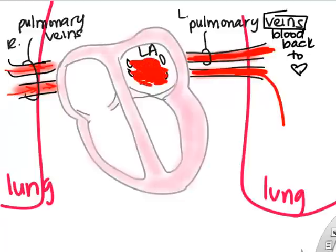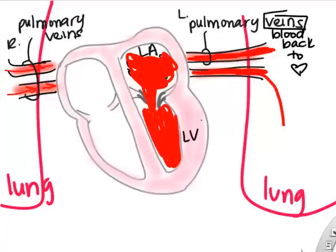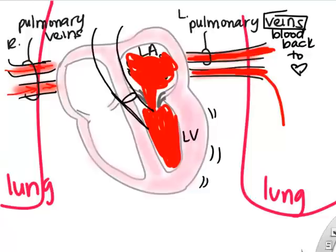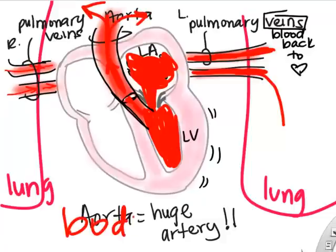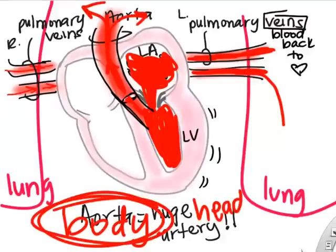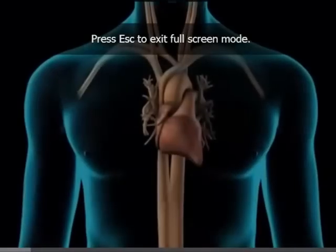Blood pressure from the left atrium pushes open the mitral valve, filling the left ventricle. When the left ventricle contracts, it squirts blood into the aorta through the aortic valve. The aorta carries blood to your head, arms, chest, and legs — all over your body. That one-way valve in the aorta is the aortic valve — and that's the pumping action of the heart.